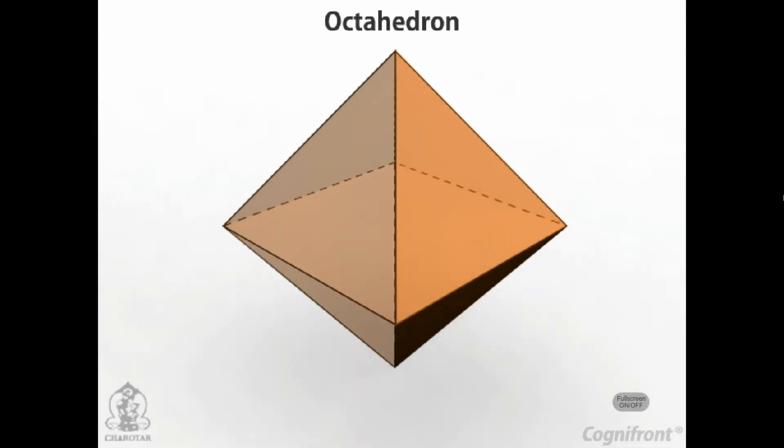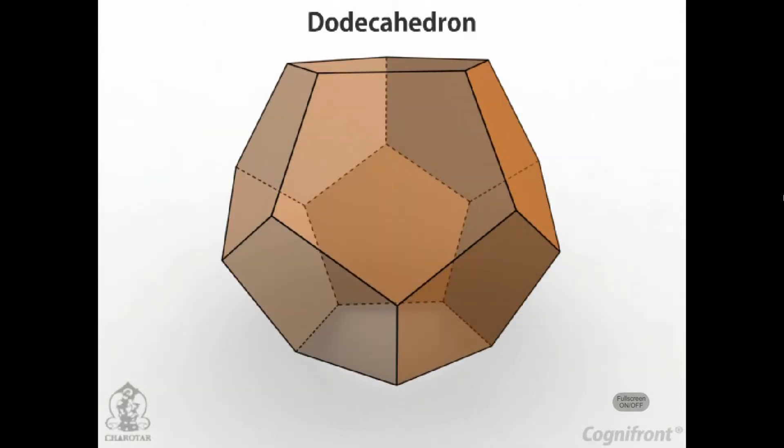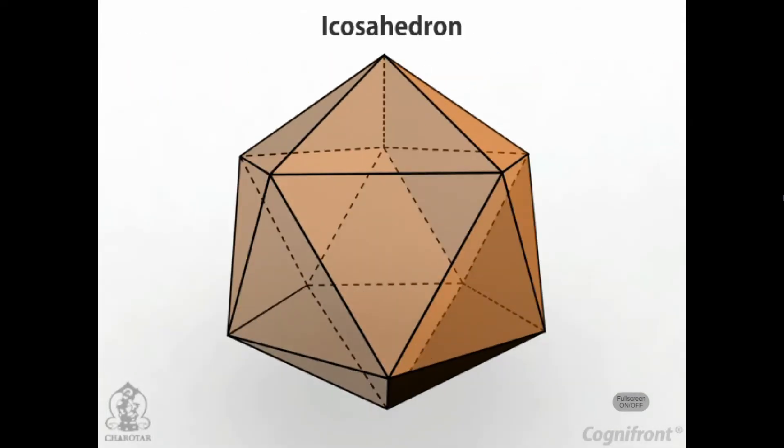Octahedron: It has eight equal equilateral triangles as faces. Dodecahedron: It has twelve equal and regular pentagons as faces. Eicosahedron: It has twenty faces, all equal equilateral triangles.